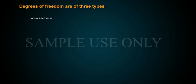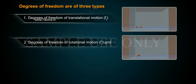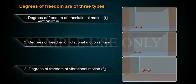Degrees of freedom are of three types: 1. Degrees of freedom of translational motion. 2. Degrees of freedom of rotational motion. 3. Degrees of freedom of vibrational motion.